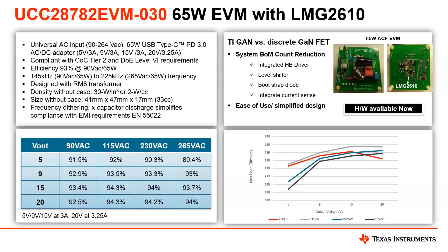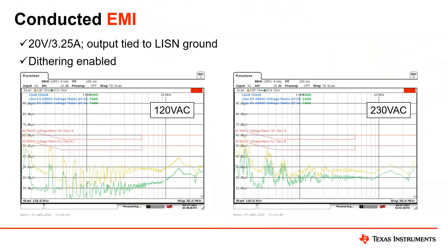On the right side you can see the load efficiency across the different AC inputs. Alongside this, we've done conducted EMI testing, which is available on TI.com. Right now we're showing the results for a 20 volt, 3.25 amp output for both 120 volt AC and 230 volt AC inputs.